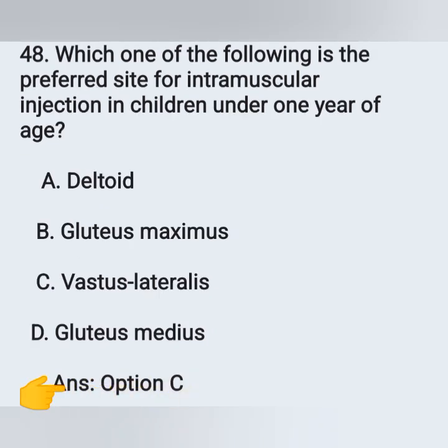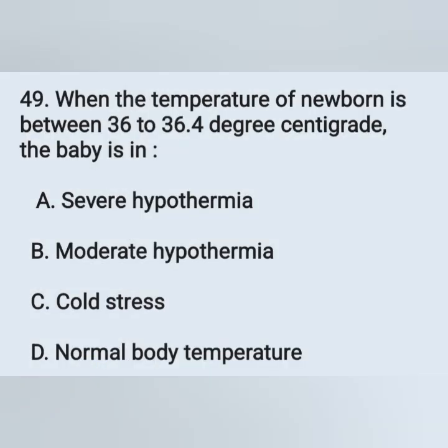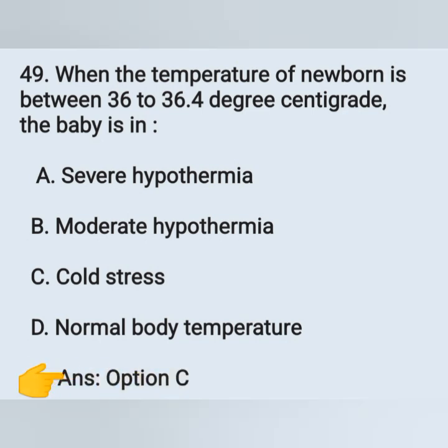Question 49: When the temperature of a newborn is between 36 to 36.4 degrees centigrade, the baby is in — options: option A, severe hypothermia; option B, moderate hypothermia; option C, cold stress; option D, normal body temperature. The correct answer is cold stress, as the body temperature is below normal.